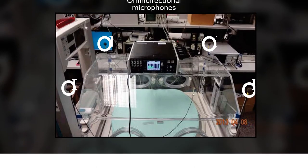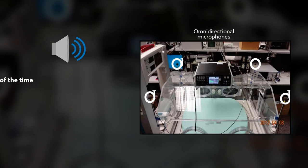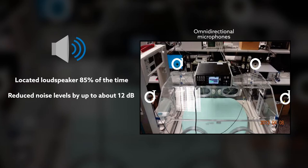The team tested their setup on a real incubator, with recorded NICU noise played over a loudspeaker. Their system was able to locate the loudspeaker correctly 85% of the time and could reduce noise levels by up to about 12 decibels. Given that the recommended noise intensity level for NICUs is 45 decibels, that reduction could be crucial in many hospital settings.